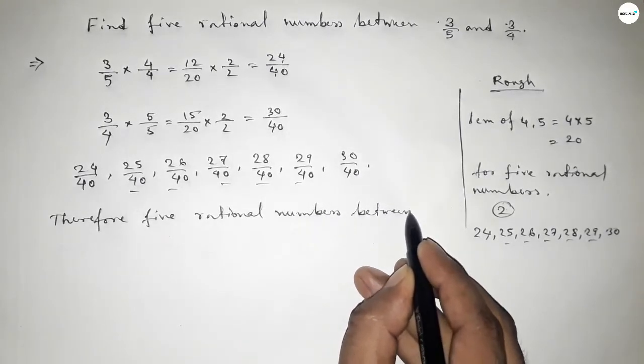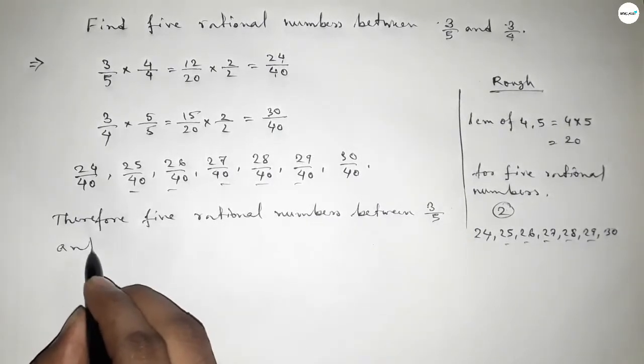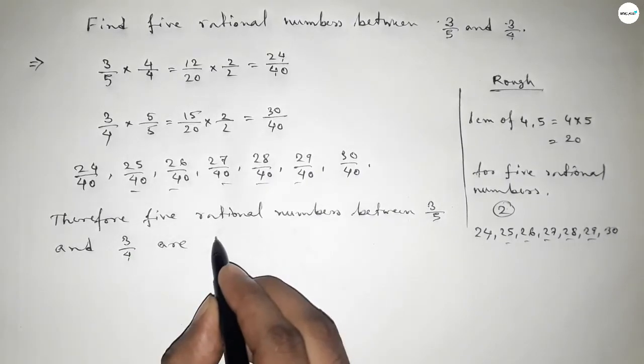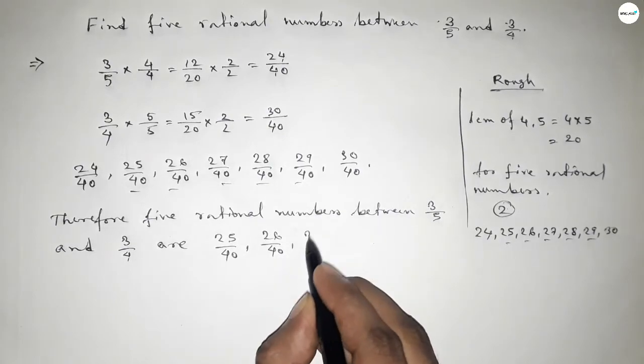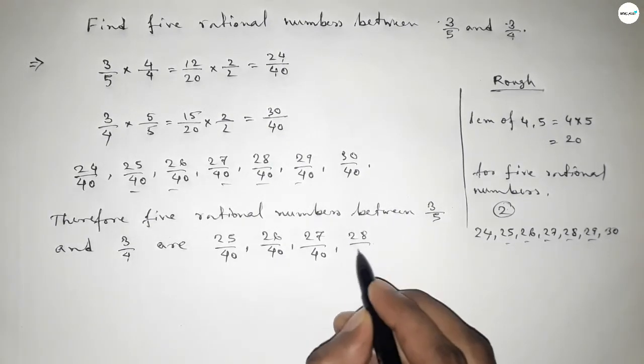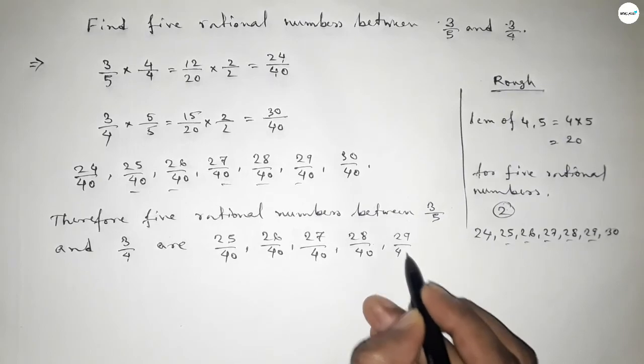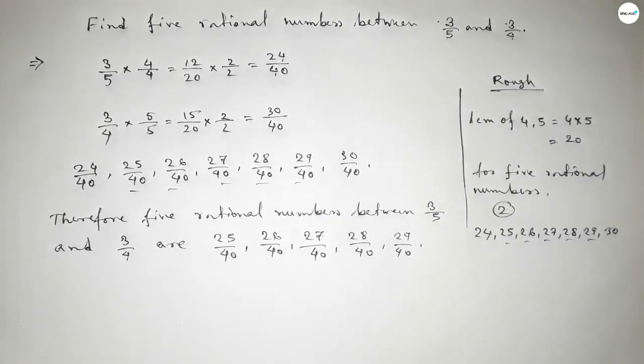So therefore, 5 rational numbers between 3 over 5 and 3 over 4 are: first one is 25 over 40, 26 over 40, 27 over 40, 28 over 40, and last one is 29 over 40. So this is the process to find out 5 rational numbers between 3 over 5 and 3 over 4.